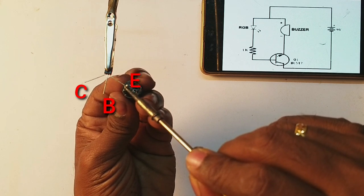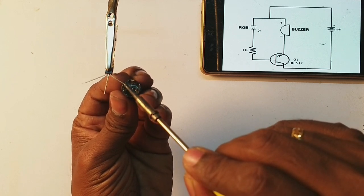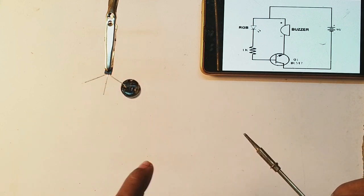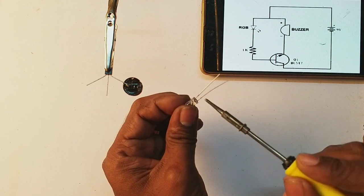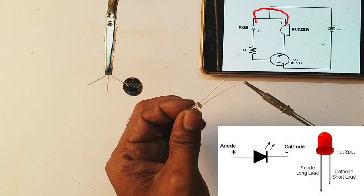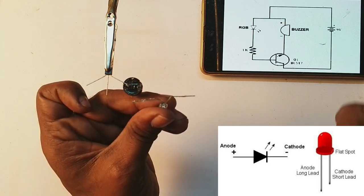Now for the LED. We're using an RGB LED for this siren alarm. The LED has two terminals: anode and cathode. One is long and one is short.